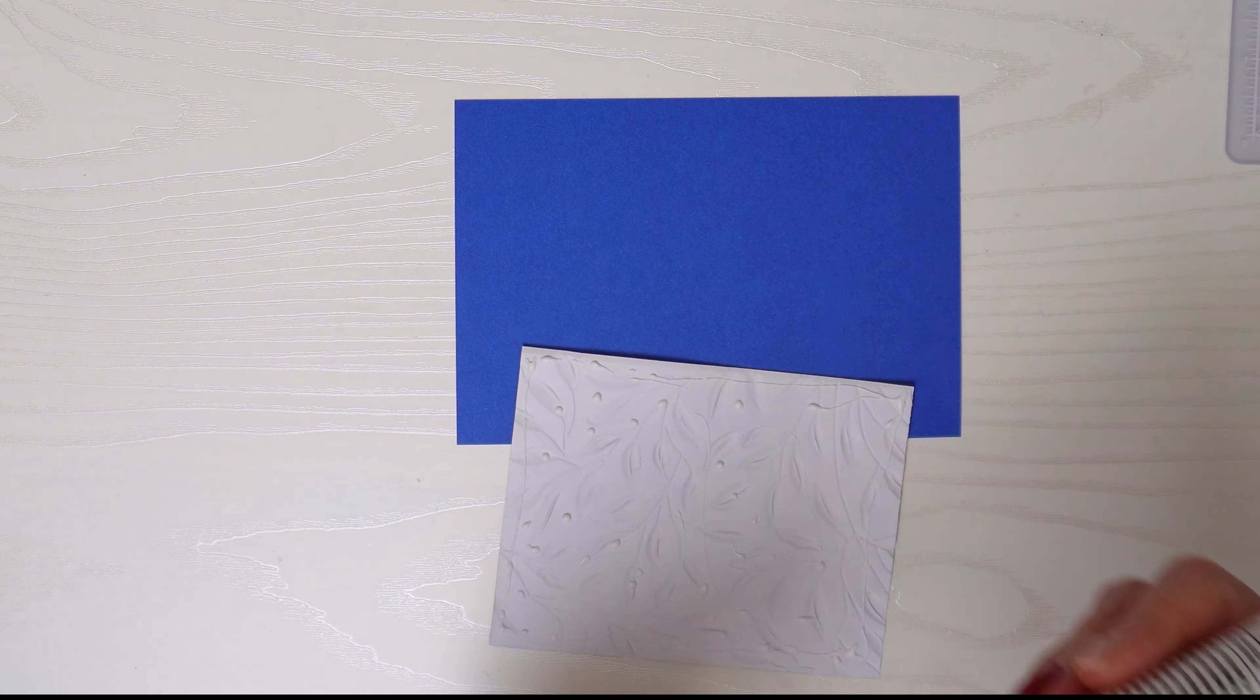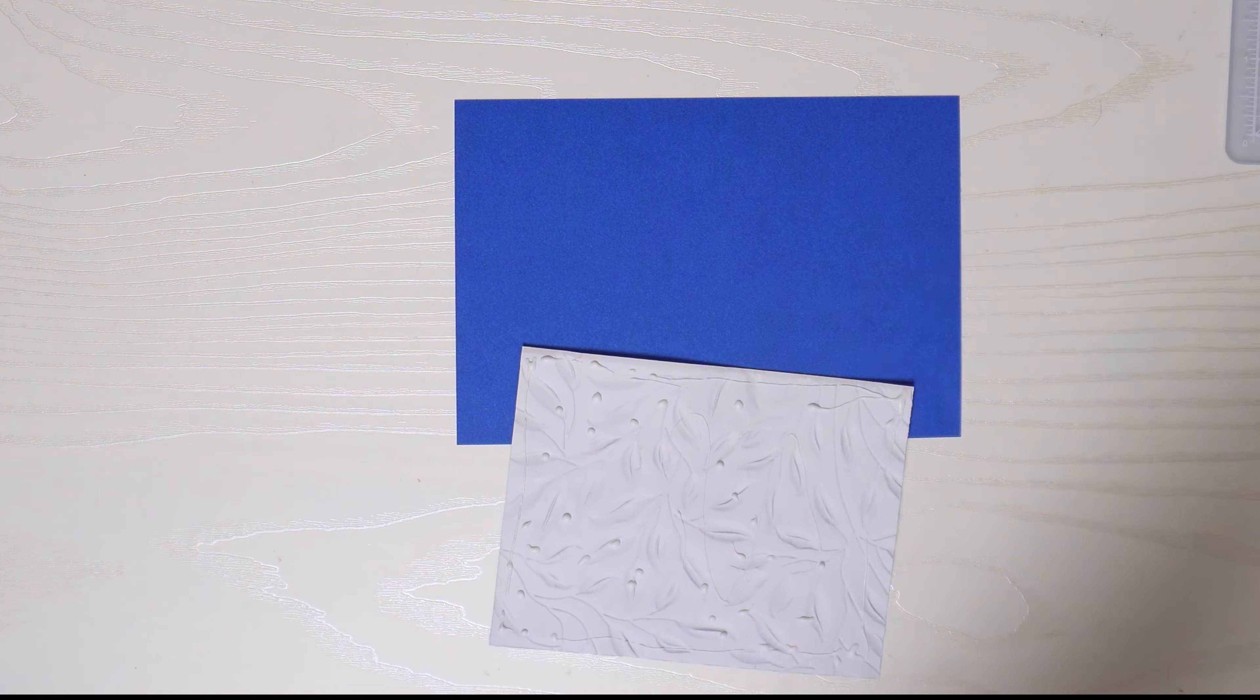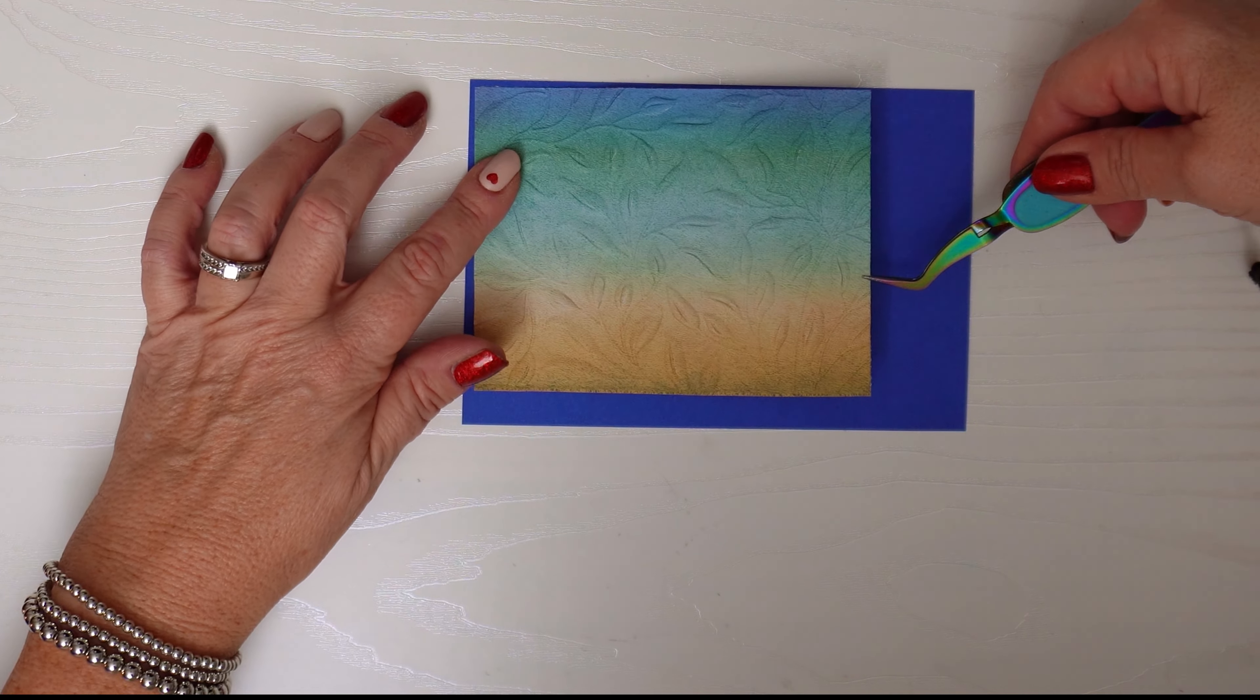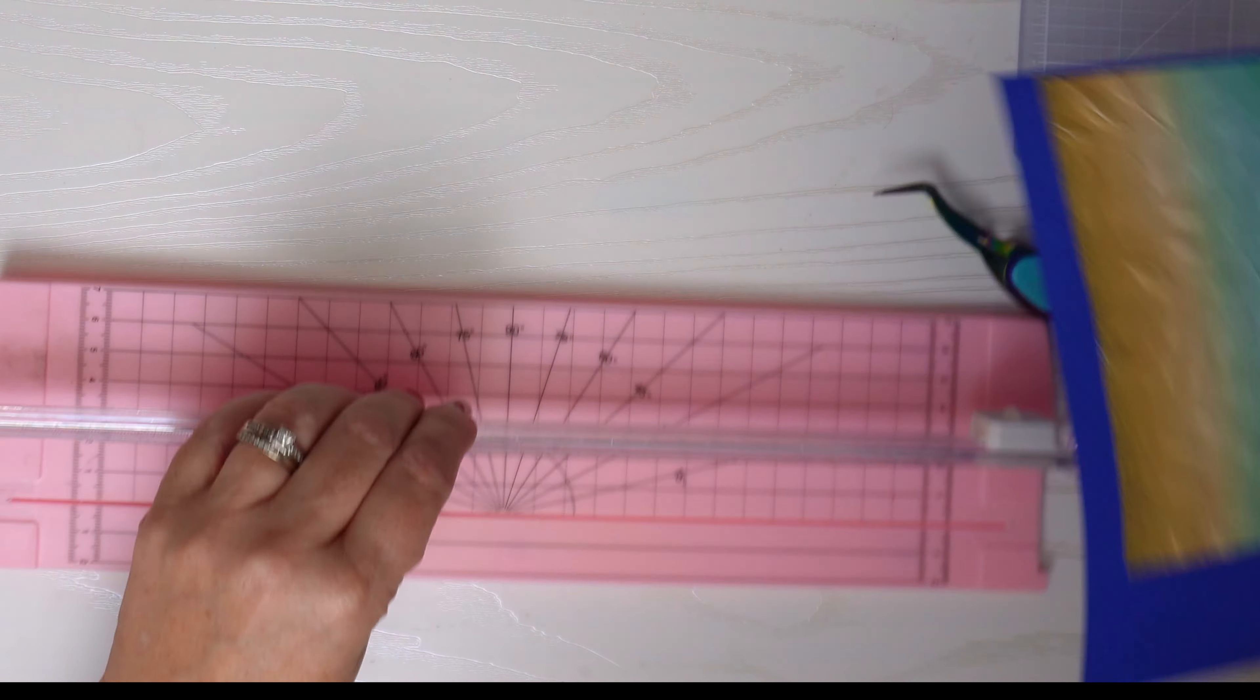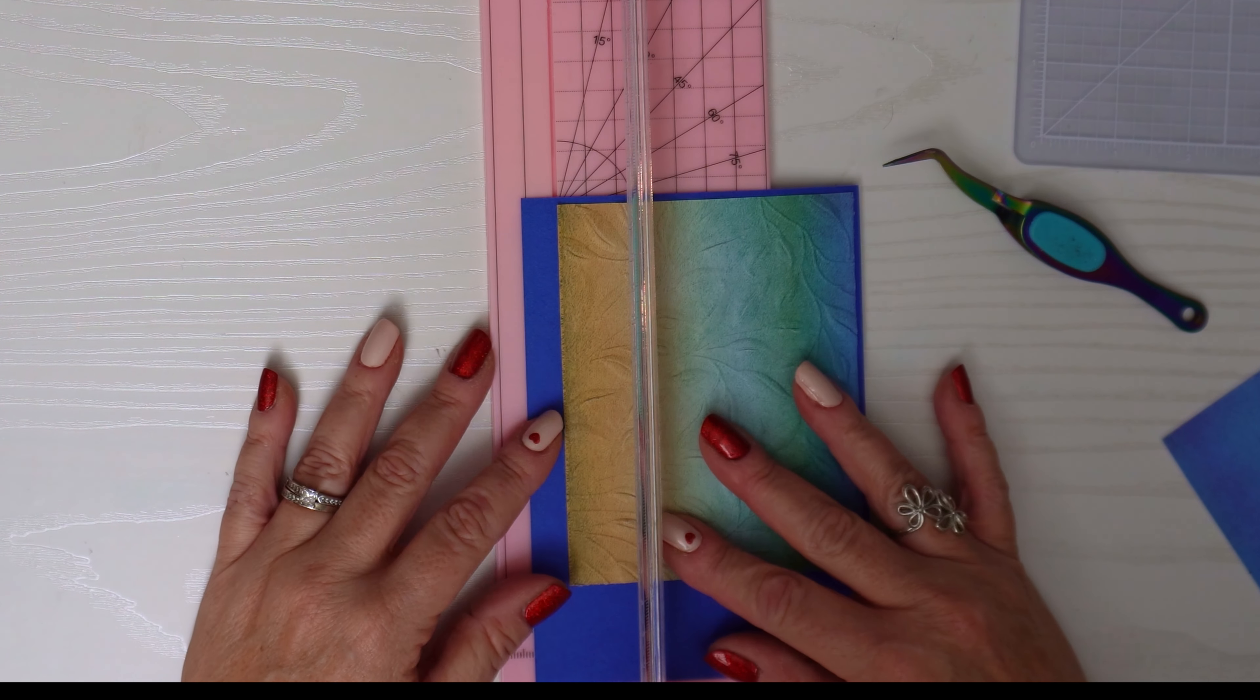Next I'll emboss the design paper just to give it a little more interest. I love this embossing folder that I'm using. It will coordinate really well with this simple yet masculine card. It's just got some nice leaves. It feels like a really nice design.